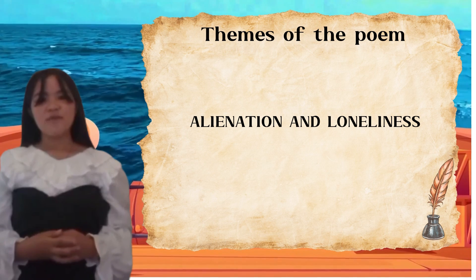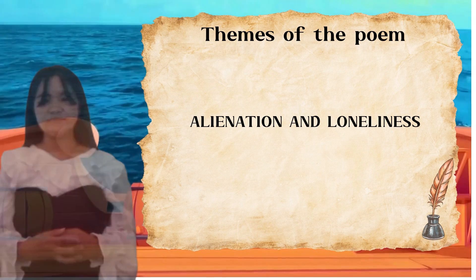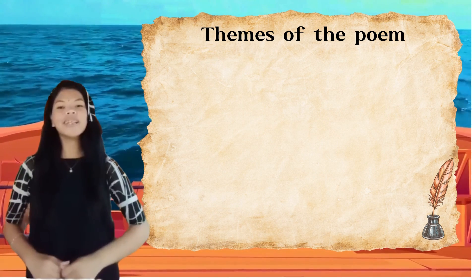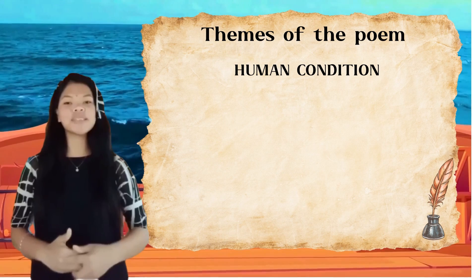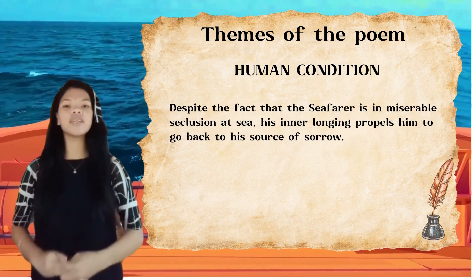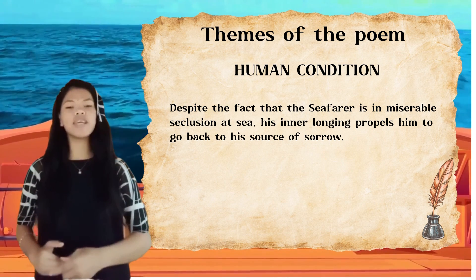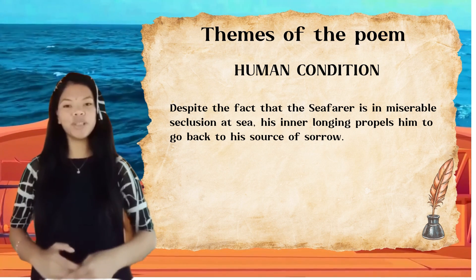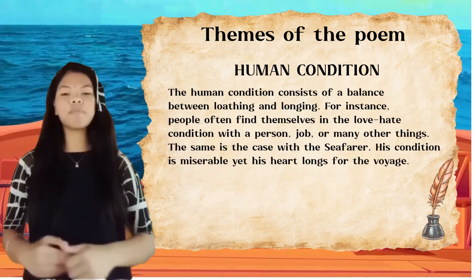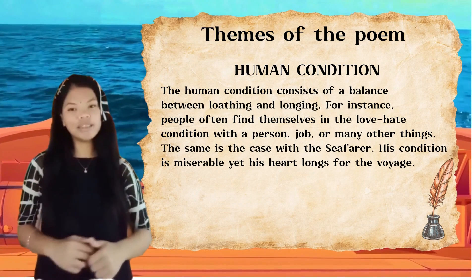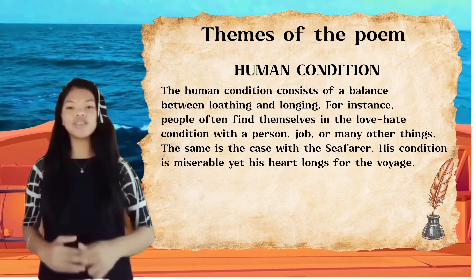Without any human connection, the person can easily be stricken down by age, illness, or the enemy. Another theme of the poem is the human condition. Despite the fact that the seafarer is in miserable seclusion at sea, his inner longing propels him to go back to his source of sorrow. The anonymous poet urged that the human condition is universal in so many ways that it figures across culture and through time. The human condition consists of a balance between loving and longing. People often find themselves in a love-hate condition with a person, job, or many other things.